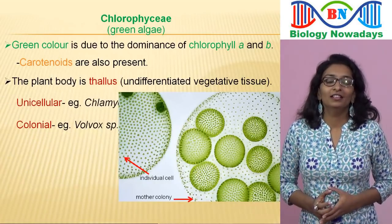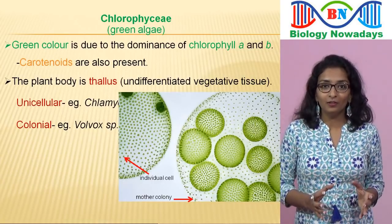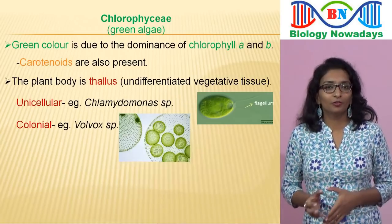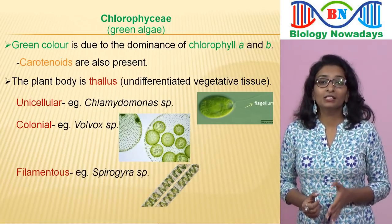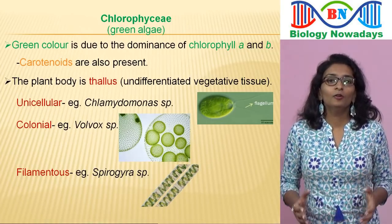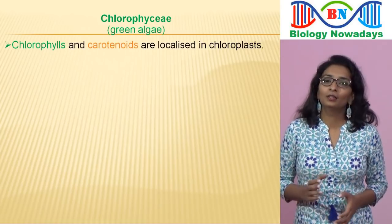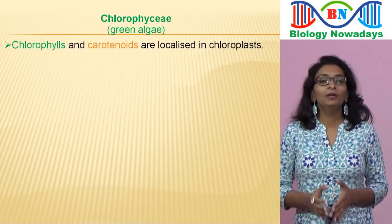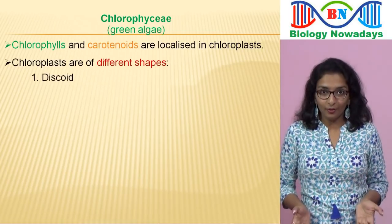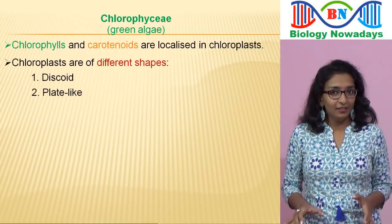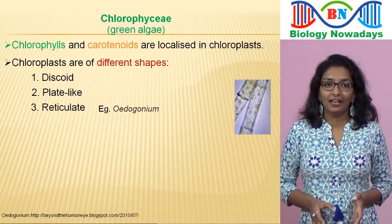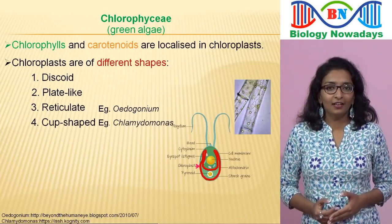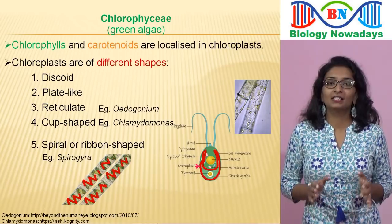This big ball is the mother colony and the small balls are the daughter colonies. The thallus of some members of Chlorophyceae may be filamentous, for example Spirogyra. Chlorophylls and carotenoid pigments are localised in the chloroplast. The chloroplast of the members of Chlorophyceae may be of different shapes: discoid or plate-like, reticulate as in Oedogonium, or cup-shaped as in Chlamydomonas, and finally spiral or ribbon-shaped as in Spirogyra.